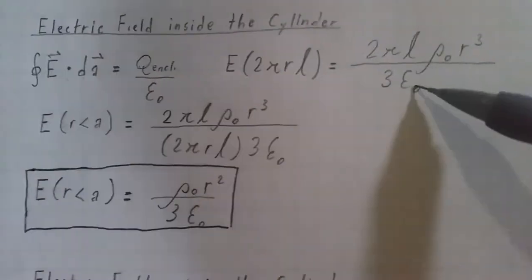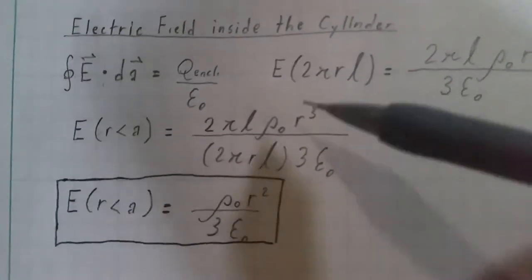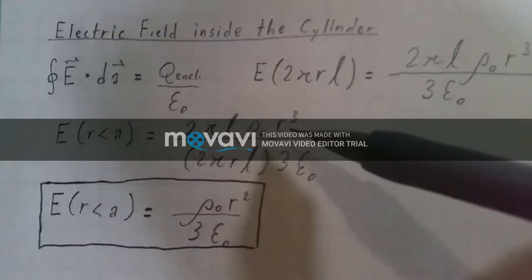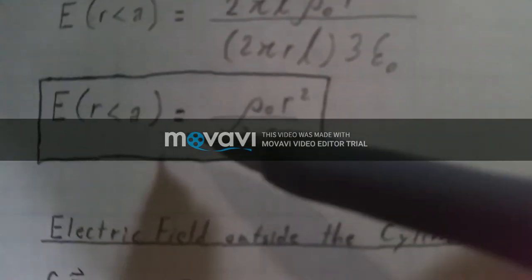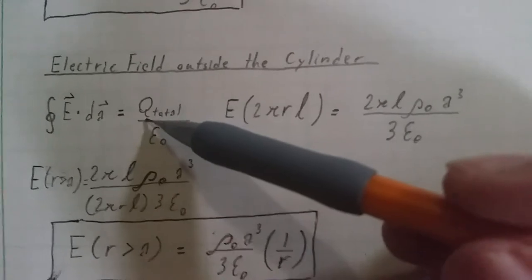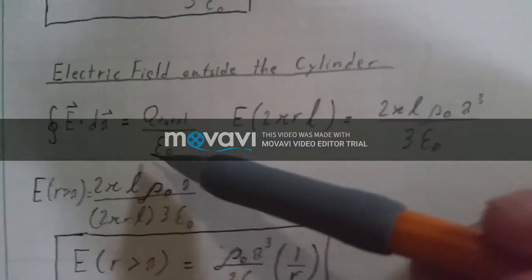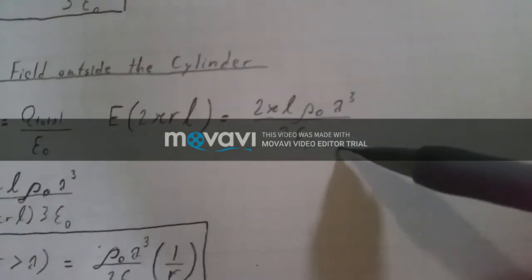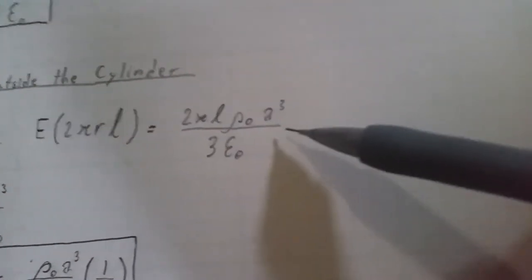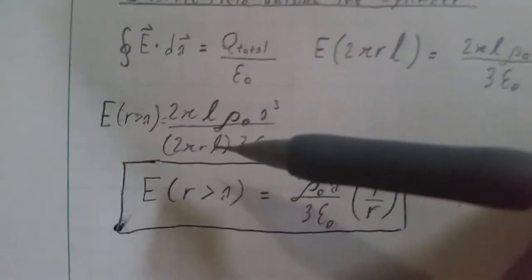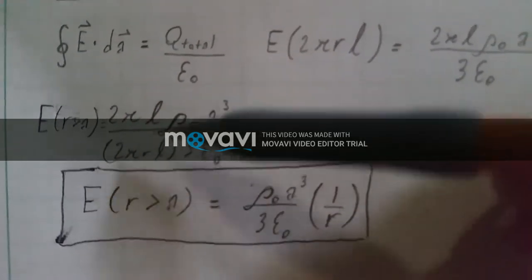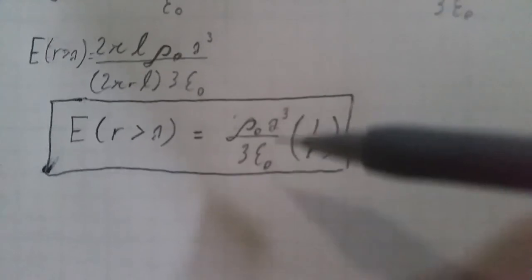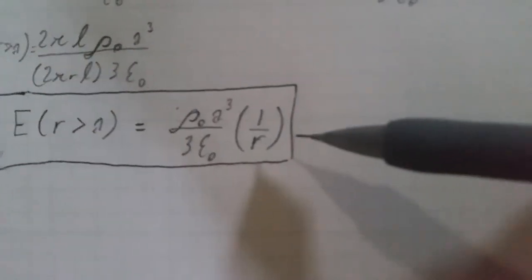Combining these two equations and doing algebra, we take r squared out of the r cubed term and cancel everything else. We end up with E inside (r less than a) equals rho naught times r squared over 3 epsilon naught. For outside the cylinder, we use q total instead of q enclosed, giving us E times 2 pi r l equals 2 pi l rho naught a cubed over 3 epsilon naught. Combining these and canceling, we end up with E equals rho naught a cubed over 3 epsilon naught times 1 over r.